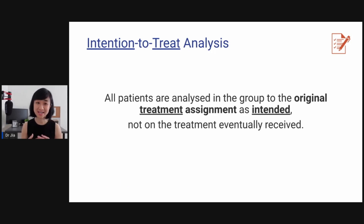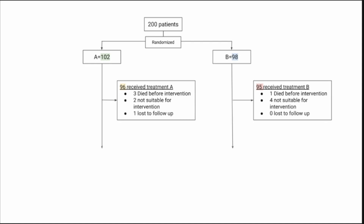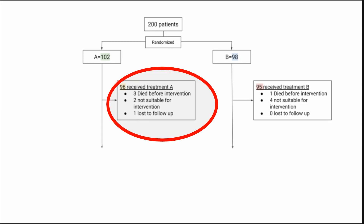Let's talk about intention-to-treat analysis. The definition is that all patients are analyzed in the group of their original treatment assignment as intended, but not on the treatment eventually received. For example, you have 200 patients randomized into two groups: group A with 102 patients and group B with 98. In reality, not all patients received their treatment — three died before intervention, two were not suitable, and one was lost to follow-up, so only 96 received treatment A.